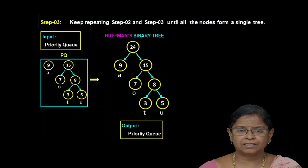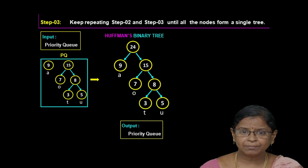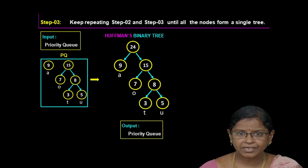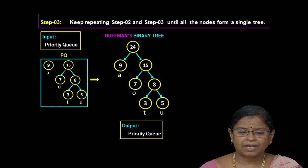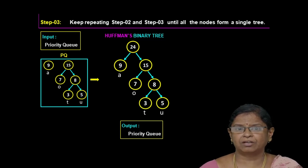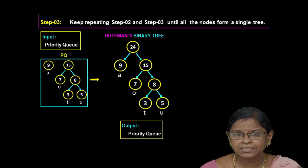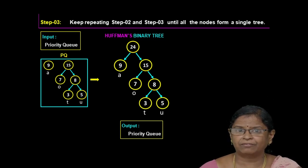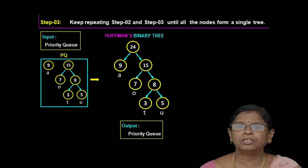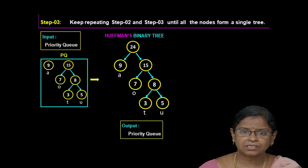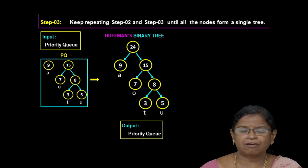Now in the last stage, the priority queue consists of only two nodes. We create a new node and add the frequencies of the first node and second node, giving 24, which is the frequency of the new node. We insert this into the priority queue. Now the priority queue consists of only one node, and it is the Huffman tree.